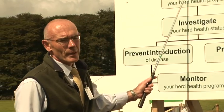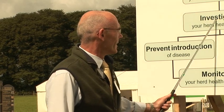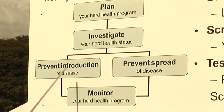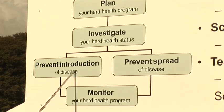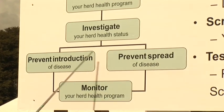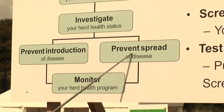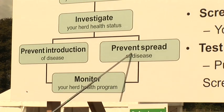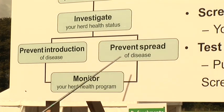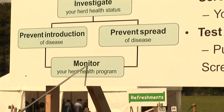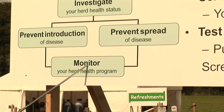The herd health plan. It's critical that you deal with your local vet to get advice specific to your farm. The first part of the plan is investigating your herd health status. The second part is preventing the introduction of disease. And the third part is preventing the spread of disease on your farm. It's critical to monitor this farm plan over time.